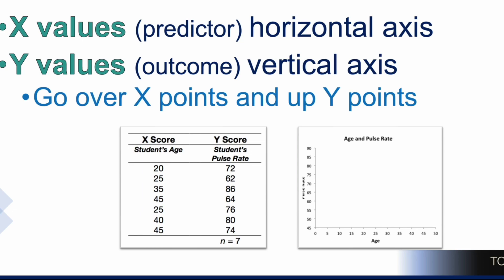For the first student, I go over 20 and up 72 and I place a dot. Then I go over 25 and up 62 and place a second dot. Already I'm seeing some kind of relationship. Let's see if it continues to hold as we add more dots. Over 35 and up 86.